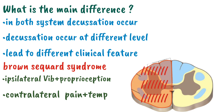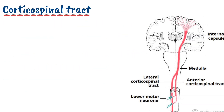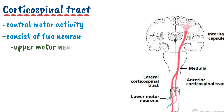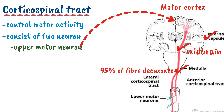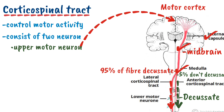Now let's look at the motor tract. The motor tract includes the corticospinal tract, which controls the motor activity of the human body. It consists of two neurons: the upper motor neuron and the lower motor neuron. The upper motor neuron arises from the motor cortex, carrying electrical activity downward through the internal capsule, then the midbrain, pons and medulla. At the level of the medulla, about 95 percent of the fibers decussate and reach the spinal cord, while the remaining 5 percent do not decussate at the medulla and instead decussate at the level of the spinal cord.